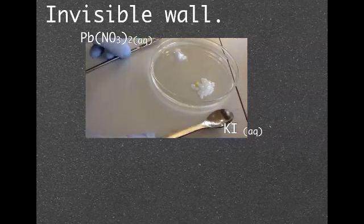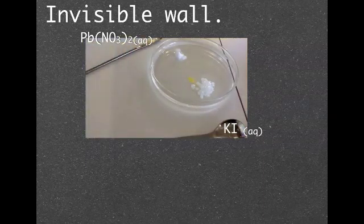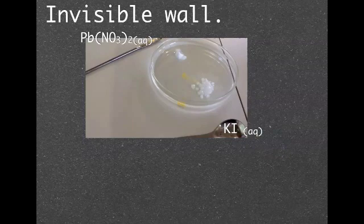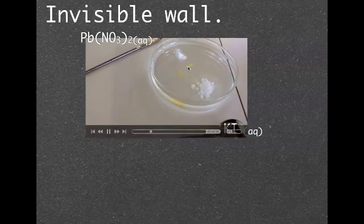What we've got is lead nitrate at the top there and potassium iodide down the bottom. As we add them to the solution, they're going to dissolve and disperse through it. As they disperse, they're going to meet in the middle. And when they meet in the middle, they form a precipitate.